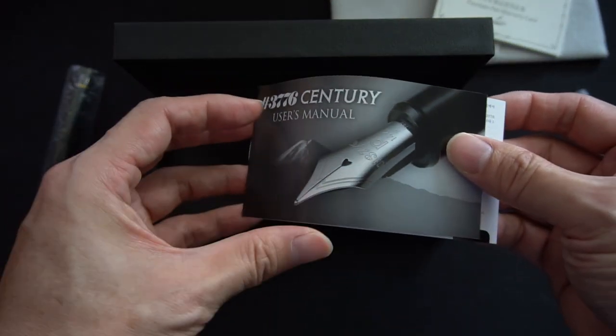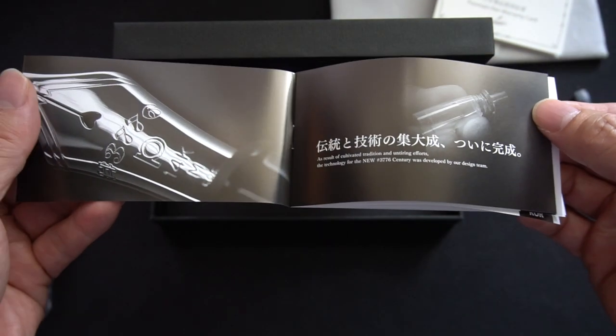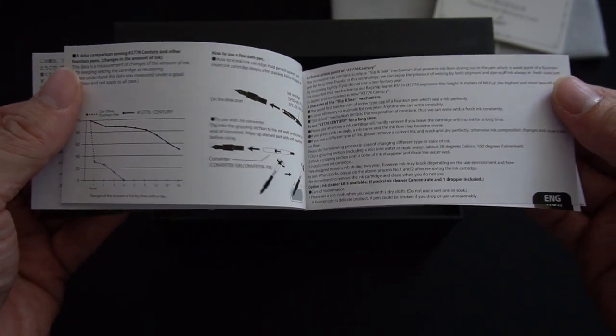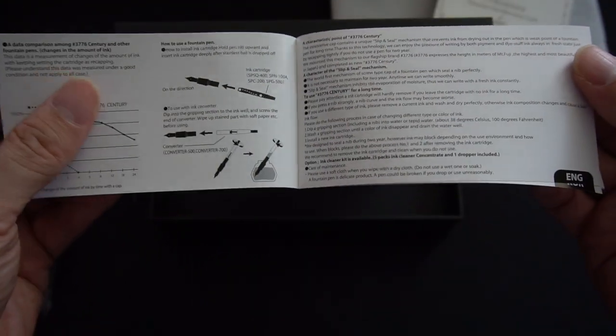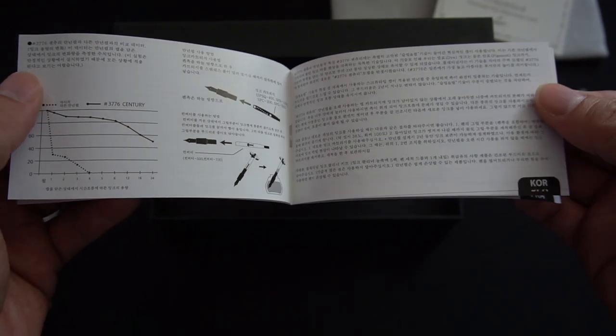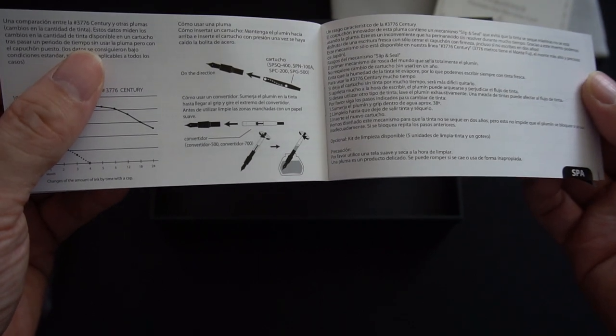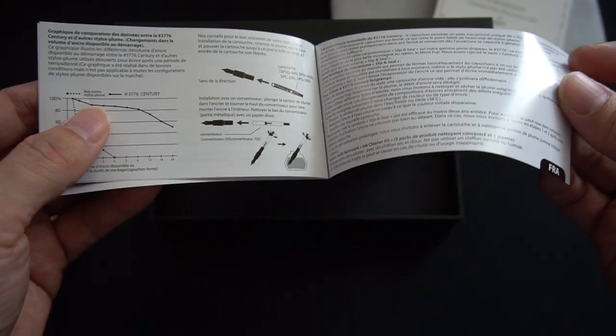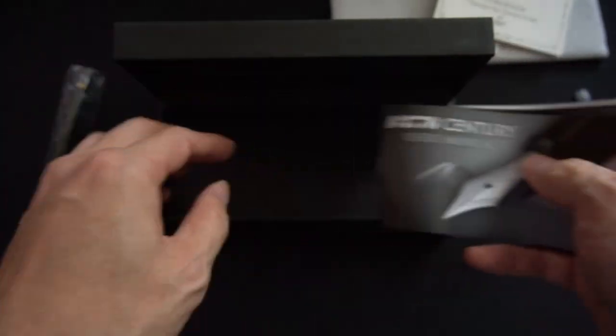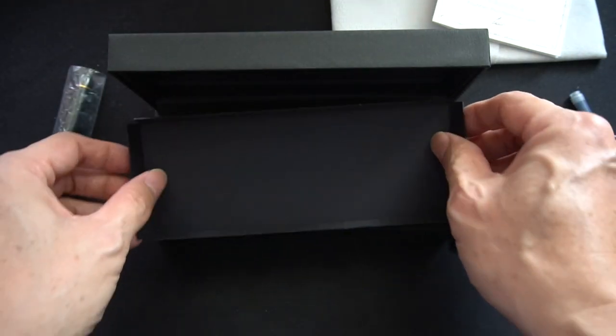The user manual. How to use a fountain pen. I'm kind of impressed that it came in English, also has Korean, presumed this is Spanish, Chinese, I think this is French. So I don't think there's anything else. No, there isn't.